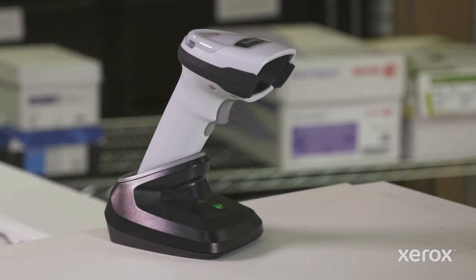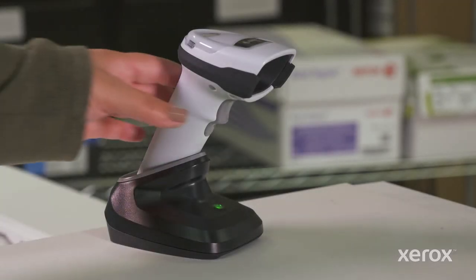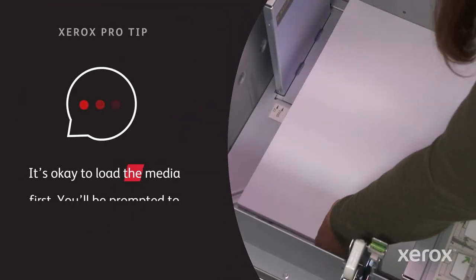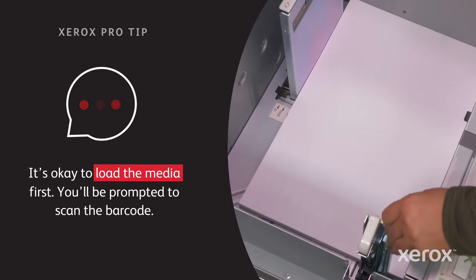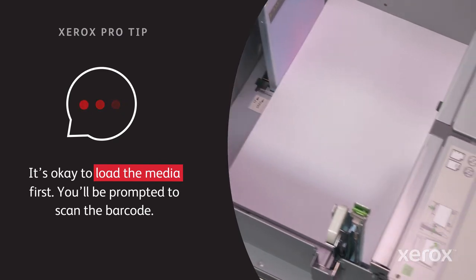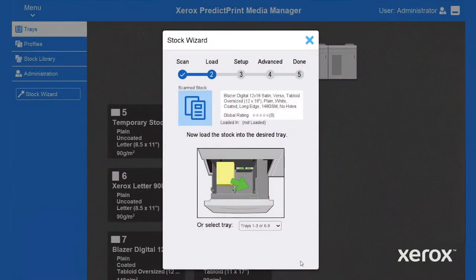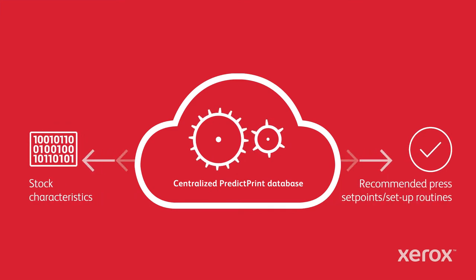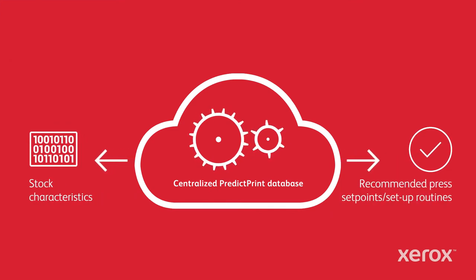Don't blink, this is gonna be quick. Scan the barcode on your paper ream or box to begin. You'll be prompted to open the tray, load your media, then close the tray. Already, PredictPrint has accessed a cloud database and has downloaded the specific attributes or set up routines you'll need for optimal stock performance.